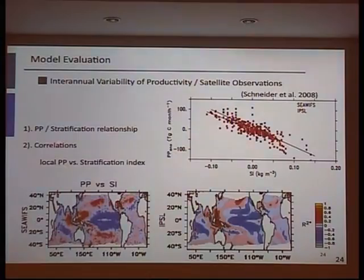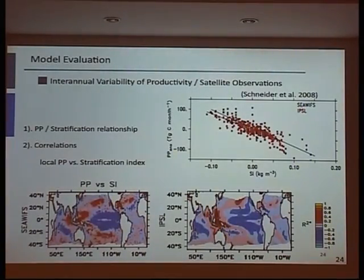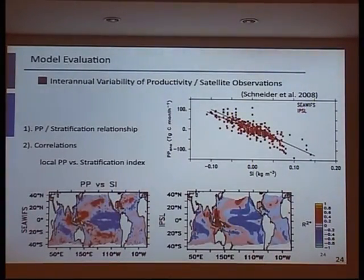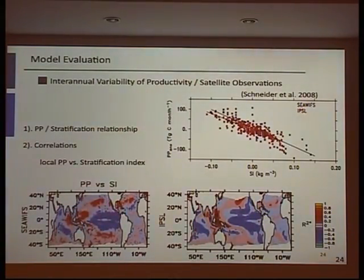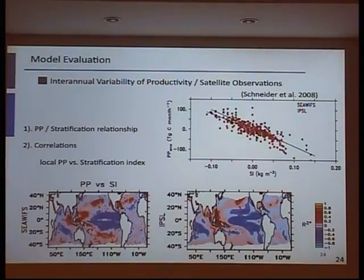We did this with the IPSL-PISCES global model, looking at the relation between a stratification index and NPP anomalies in the tropical ocean (40°S to 40°N). The data from 1997 to 2005 are shown in black and the model in red. Even if the model doesn't reproduce high El Niño events like those observed in 1997, the relationship between changes in NPP and stratification is quite well reproduced. At the local scale — shown as a correlation map — the model reproduces similar spatial patterns to satellite observations.